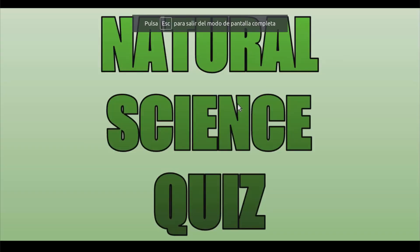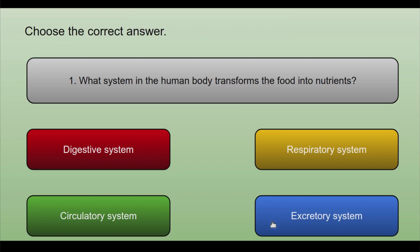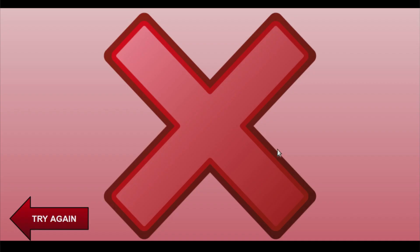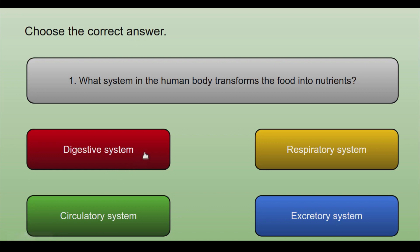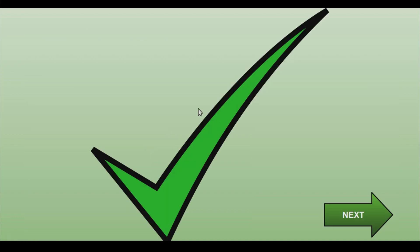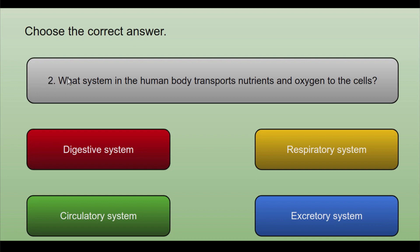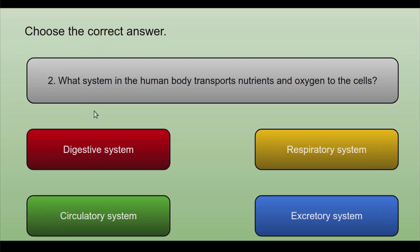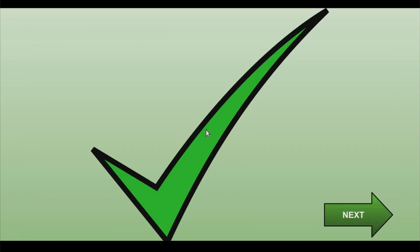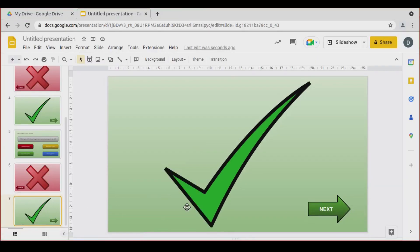I'm in the slideshow. If I click on Excretory system — it is incorrect, but I can try again. Back to question one. Respiratory system — incorrect. Digestive system — it takes me to the check mark slide, the correct answer. I click Next and I'm in question two. Excretory system — incorrect. Try again takes me back to question two. Respiratory and Digestive are also incorrect. Circulatory system takes me to the check mark. I click Next and nothing happens because there are no more slides — that's the end.